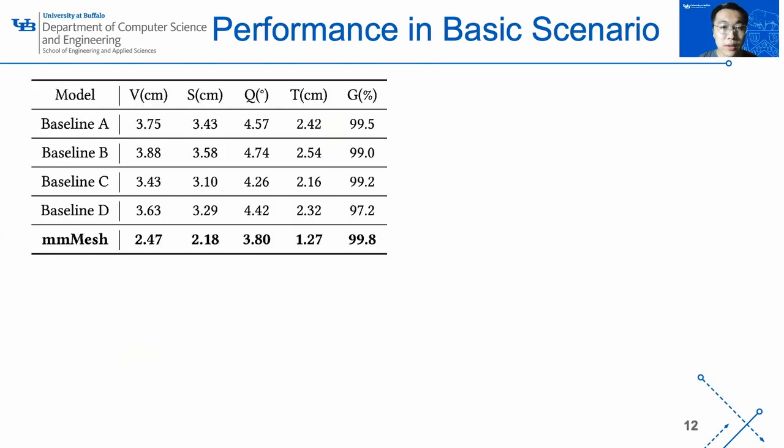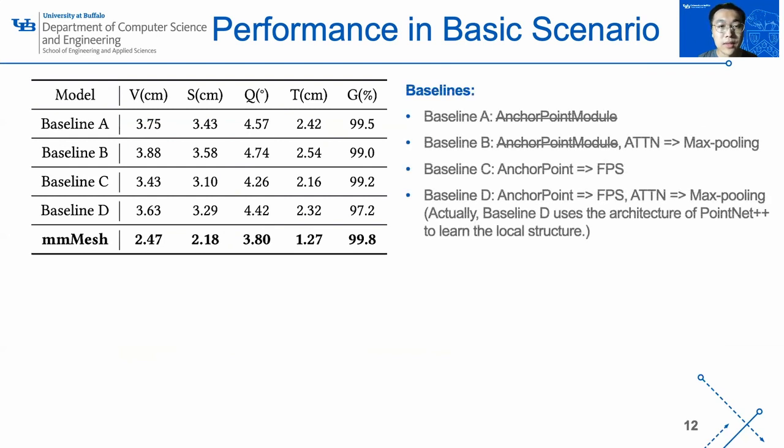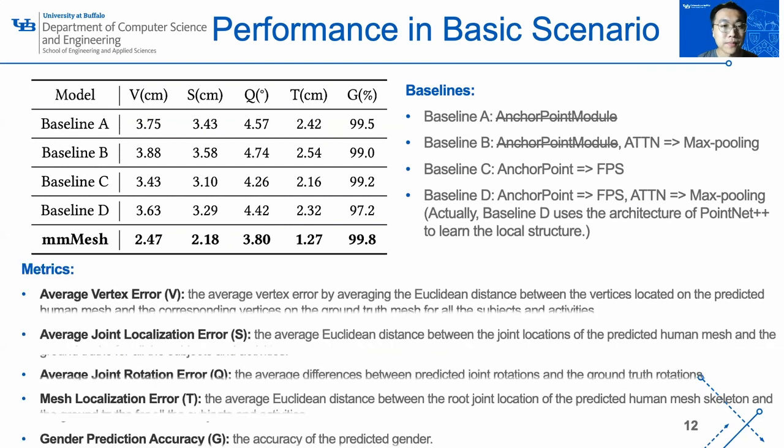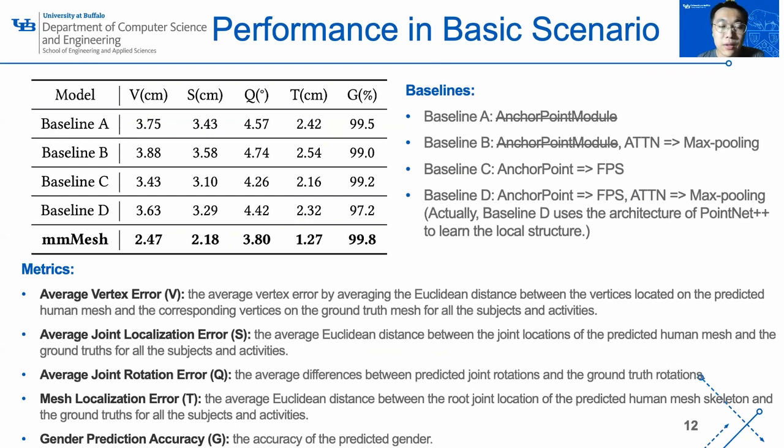Next, I will report the quantitative results in this video. For baseline, since there is no existing model to reconstruct the dynamic human mesh from point clouds, we design our baselines by removing or replacing the modules in the architecture of our proposed mmMesh model. As for the metrics, V is the average vertex error, which is the average Euclidean distance between the predicted mesh vertices and the ground truth mesh vertices. Similarly, J is the average joint localizing error, Q is the average joint rotation error, T and G are localization error, and gender prediction accuracy. In table, we can find our mmMesh model achieves the best result. The average vertex error is only 2.47 centimeters.